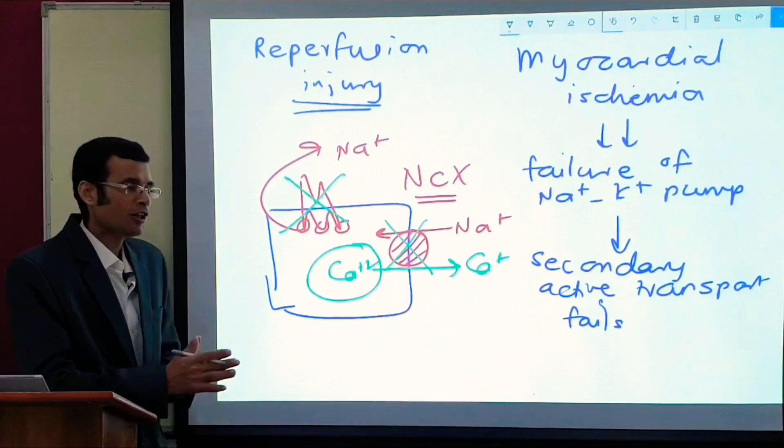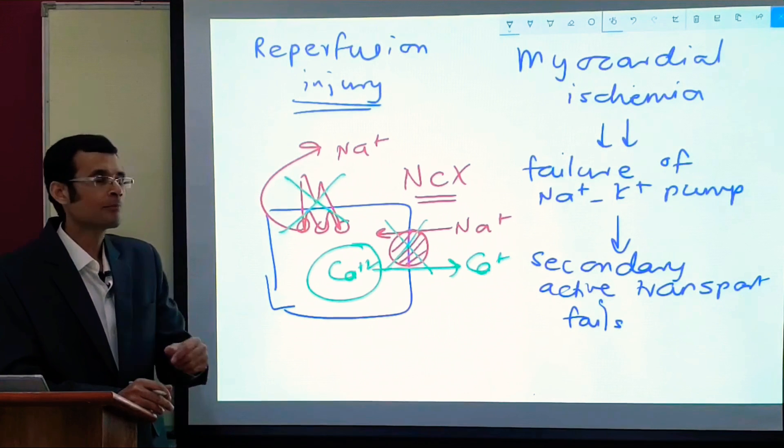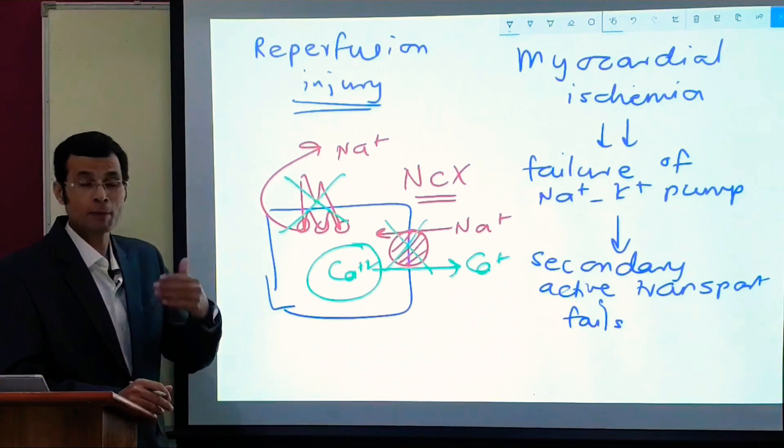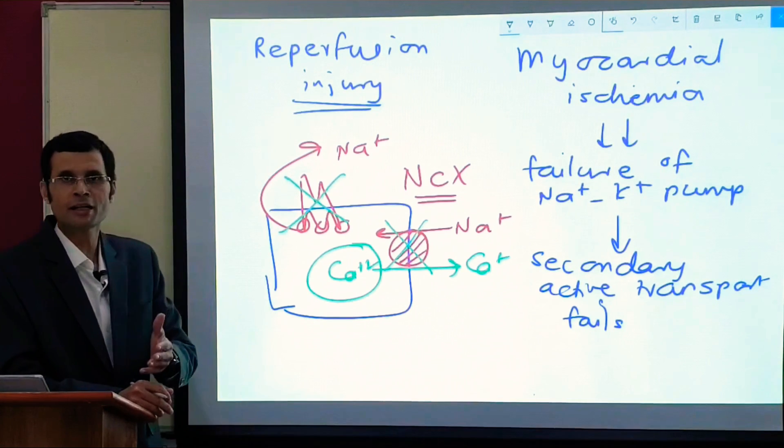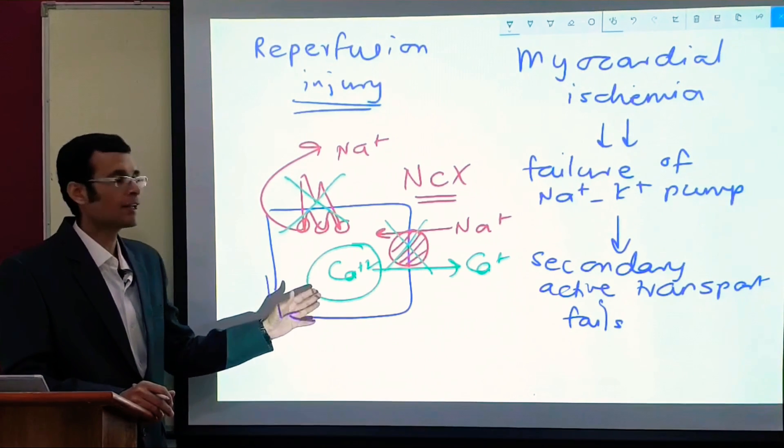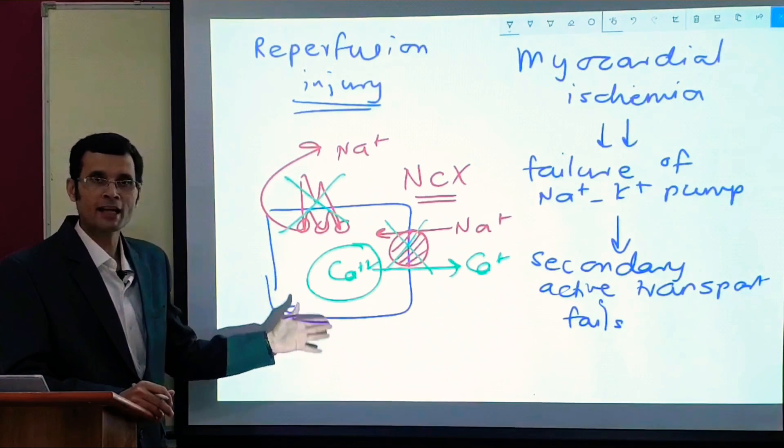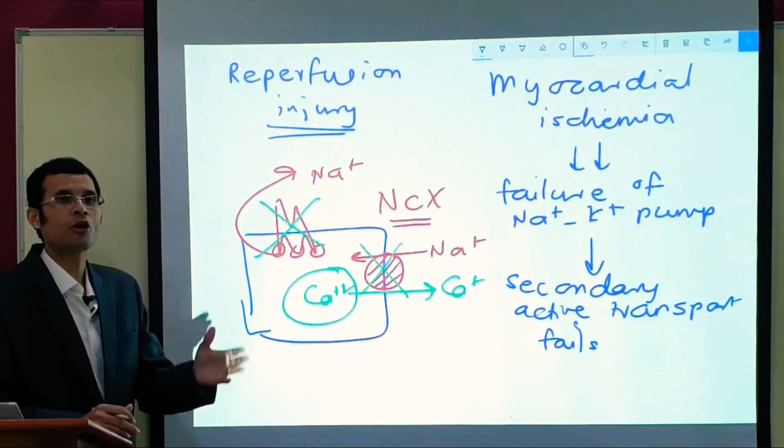We will do well to recall that the strength of contraction of any muscle depends upon or is proportional to the amount of calcium present in the fiber, whether it is skeletal muscle or cardiac muscle. So increased amount of calcium means there is a possibility of a stronger contraction.